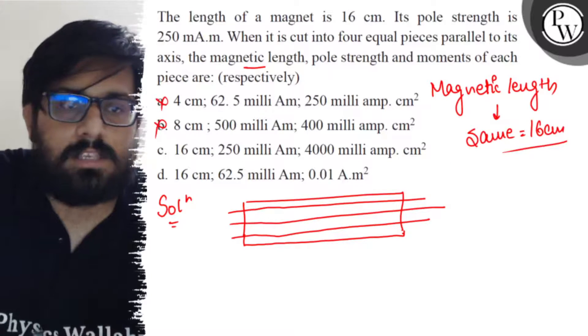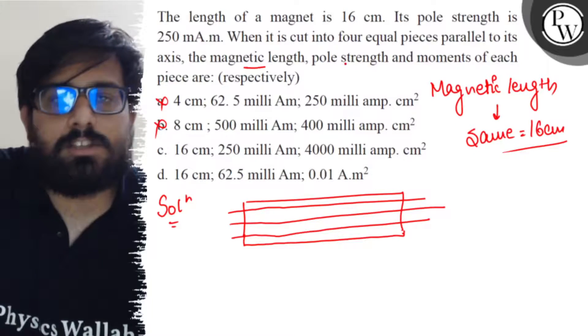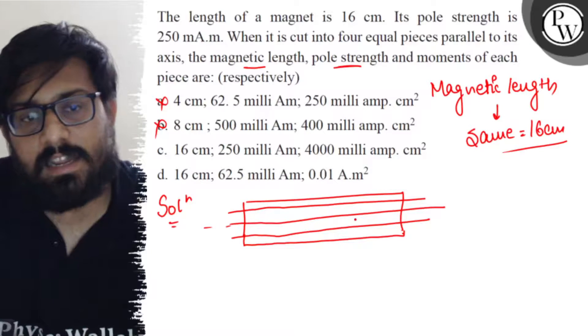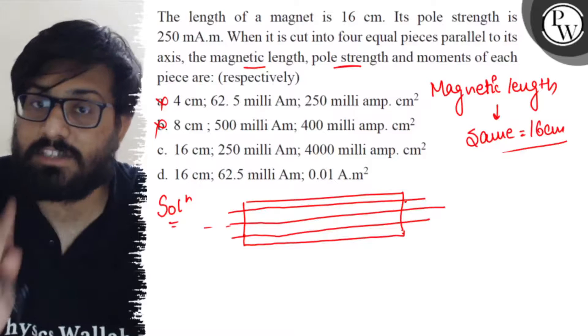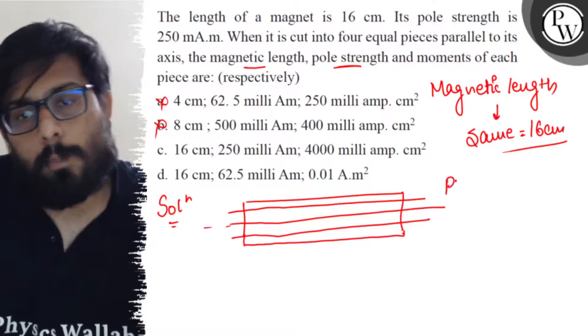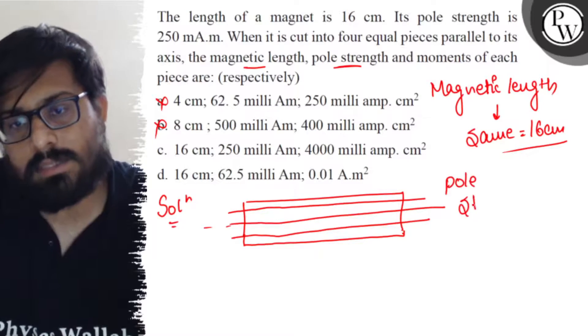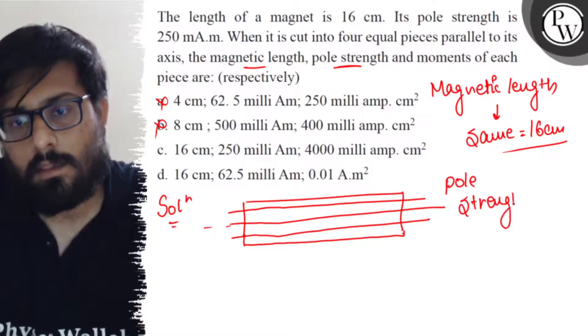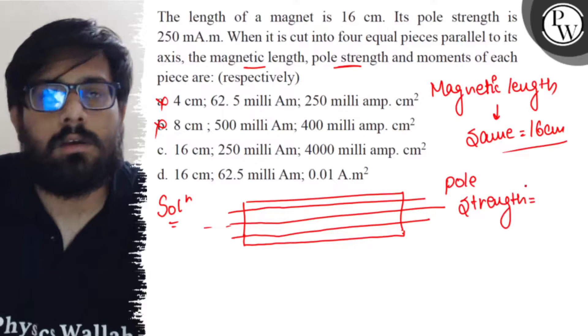So C or D may be the answer. Now let's talk about the pole strength. Since you cut it along the axis, definitely the pole strength will reduce. The pole strength is 250